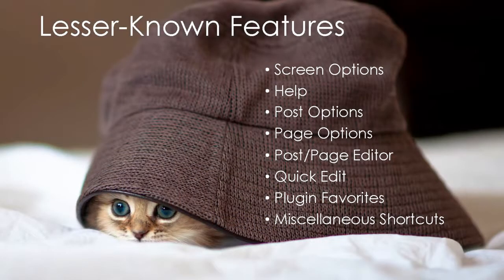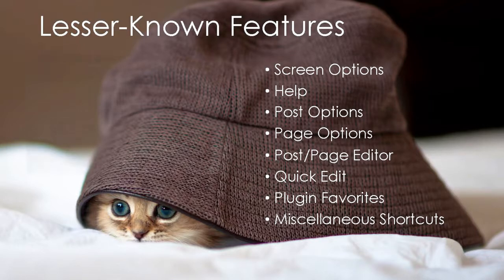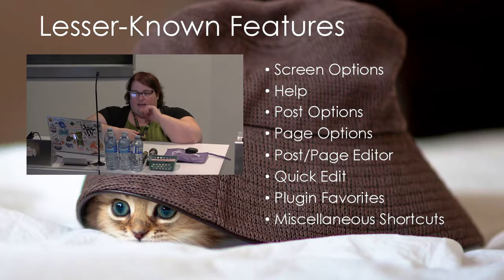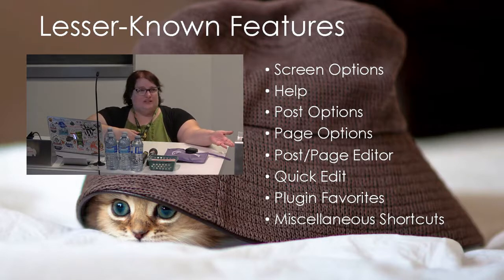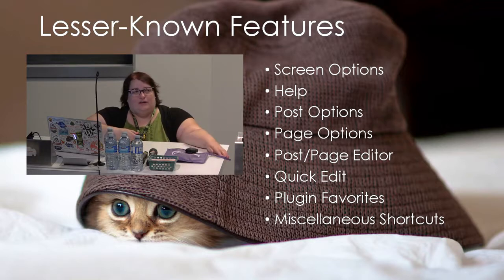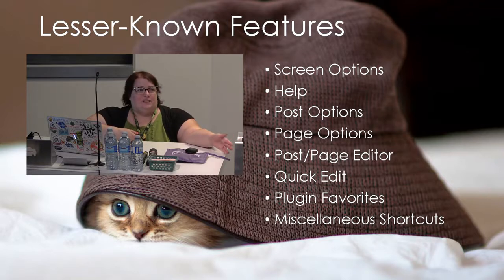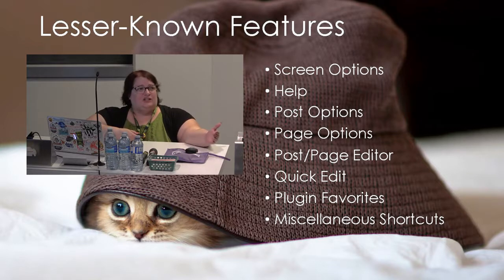Screen options are something that appear on many of the admin pages in your dashboard. You'll see screen options on things like the dashboard, your pages and posts, comments, widgets, menus, plugins, and even on your users' pages. They include the standard options that come with WordPress, but depending on which themes and plugins you have installed, you'll see additional options that pertain specifically to your theme and plugins.